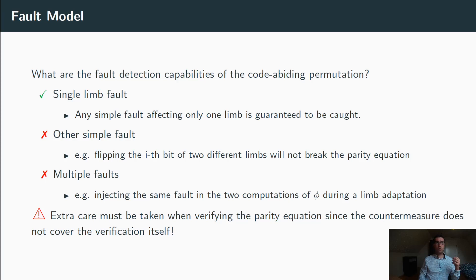The code-abiding permutation might also not detect multiple faults. For example, when the same exact fault is injected in the two computations of phi during a limb adaptation. However, injecting multiple compensating faults requires for the attacker to have very precise control on the effect of the fault it injects. If this is not the case, then multiple random faults are very much likely to break the parity equation and thus be detected.